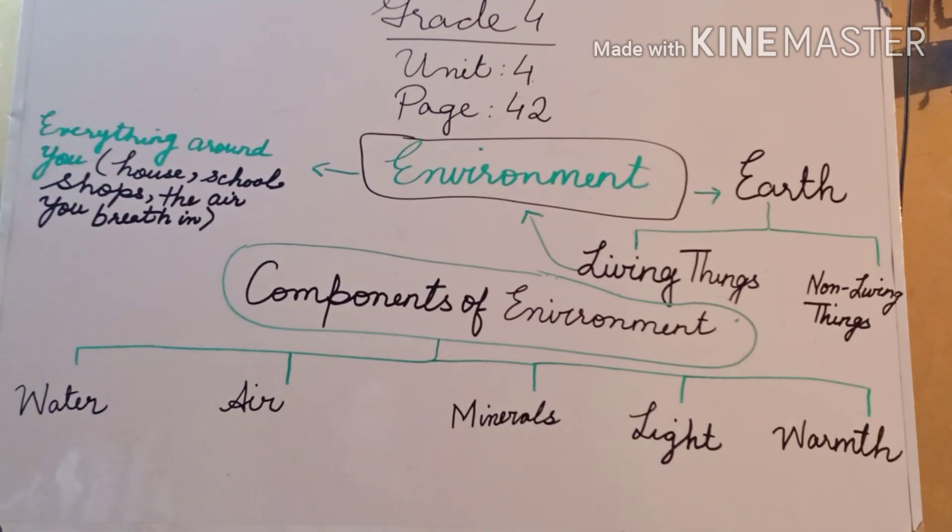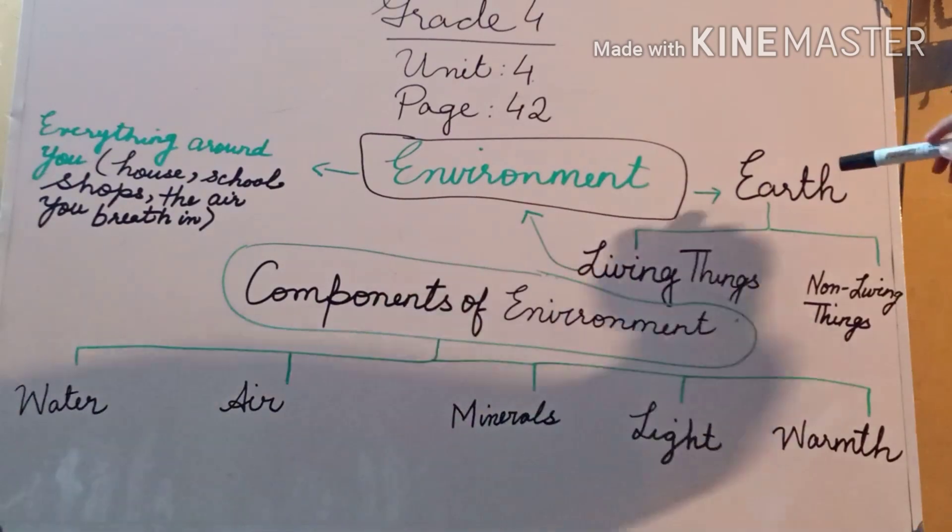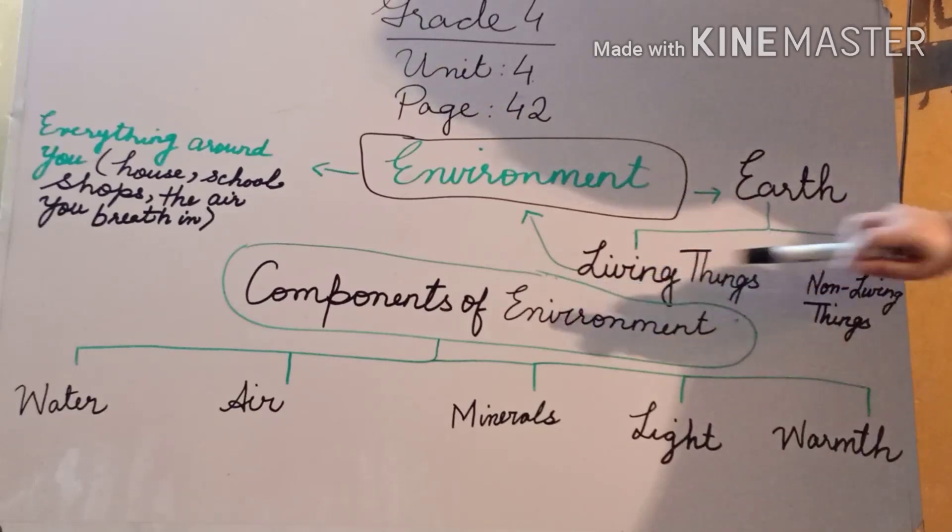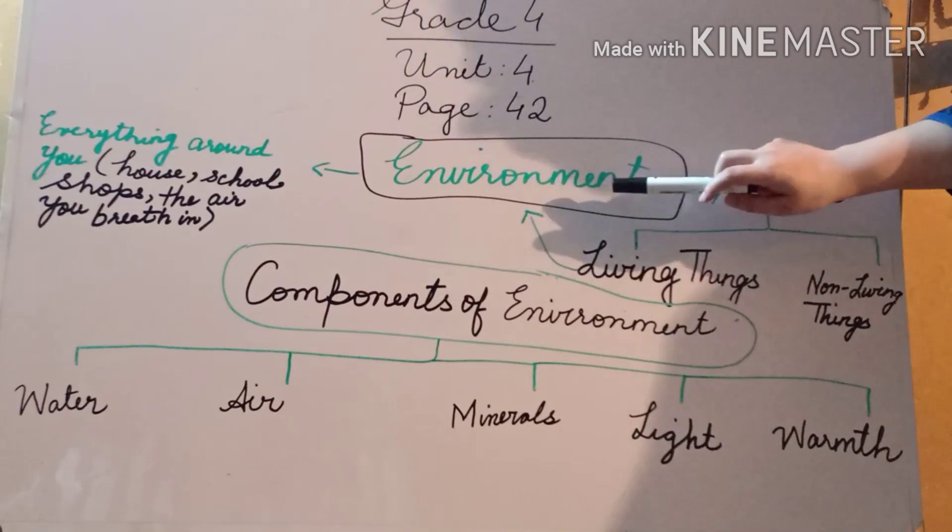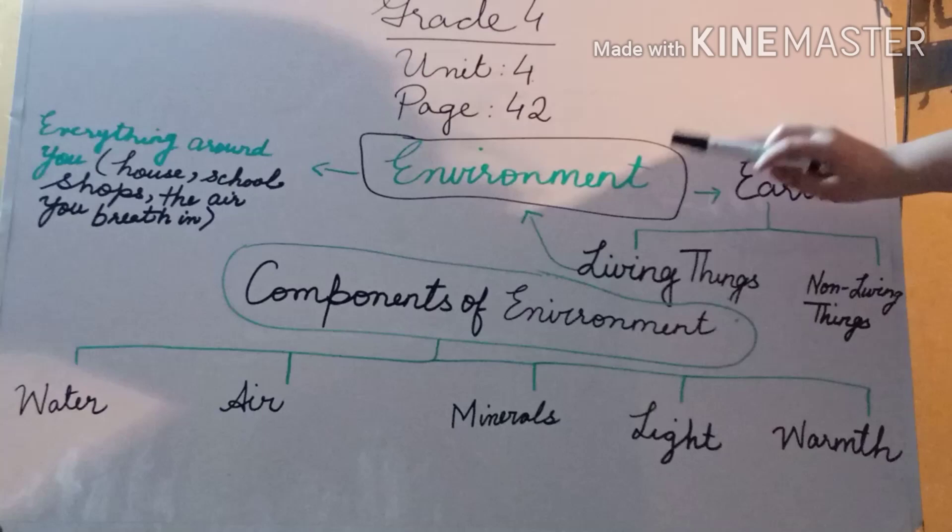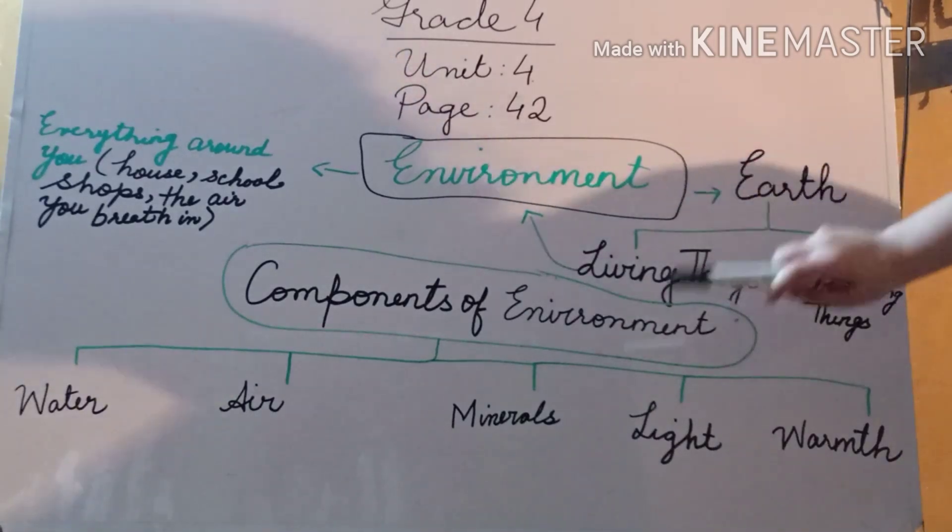Our environment is the Earth. Earth basically consists of two things: living things and non-living things. Every living thing has its own environment, that means every living thing has different conditions that it needs for its survival, for its living.